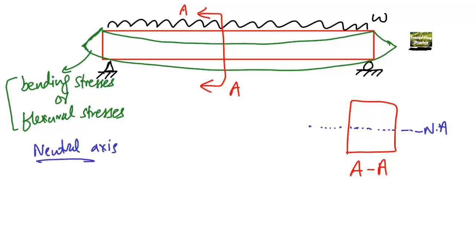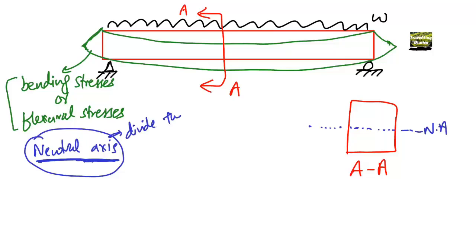The neutral axis is the region or the zone that divides the beam into two parts: the compression zone and the tension zone. So it is the axis of the beam that divides the compression zone and the tension zone.